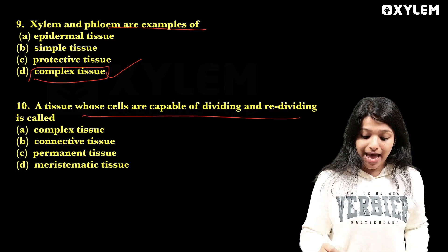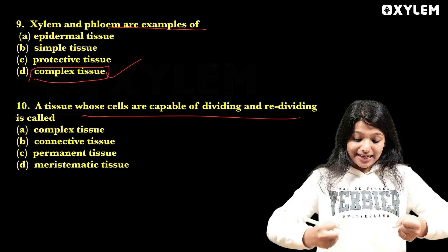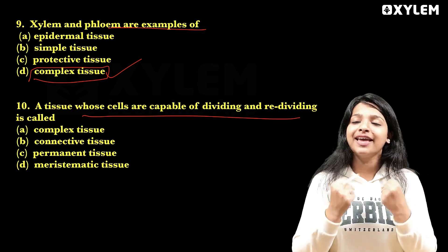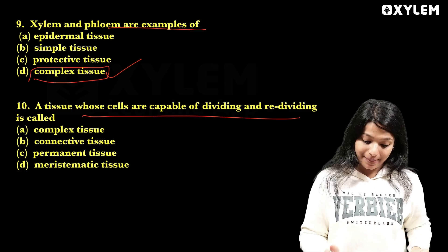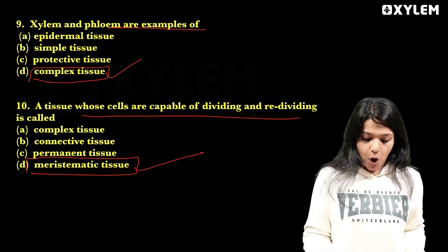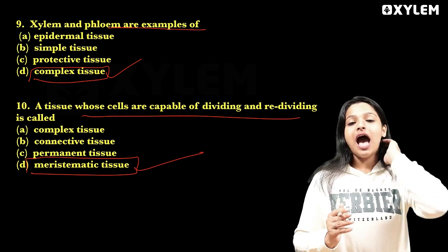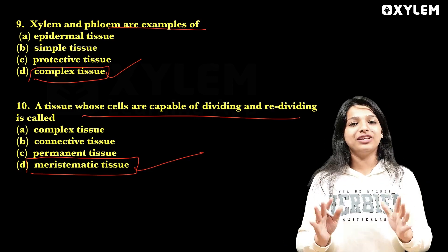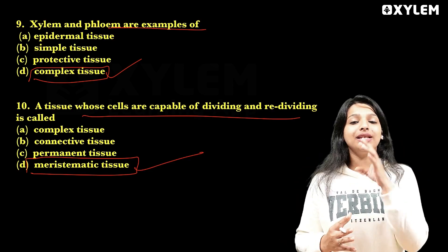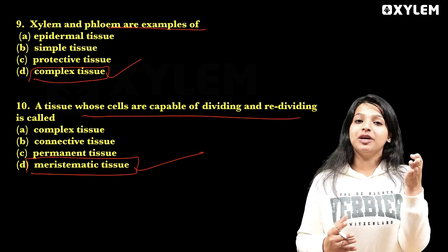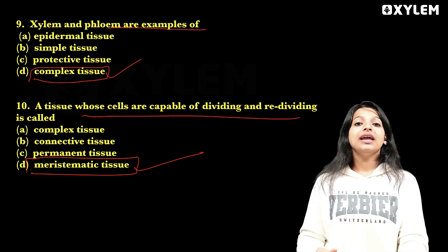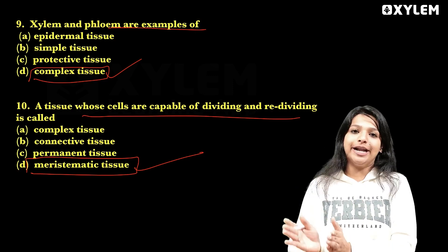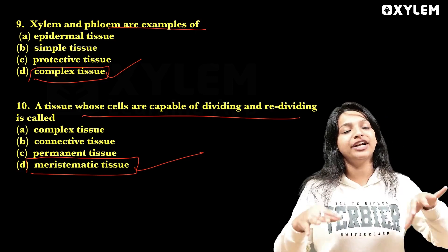A tissue whose cells are capable of dividing and re-dividing — actively dividing cells — that is meristematic tissue, option D is the right answer. In plants we have permanent tissues and complex tissues. In animal tissues we have epithelial tissue, muscular tissue, nervous tissue, and connective tissue. That is the classification.